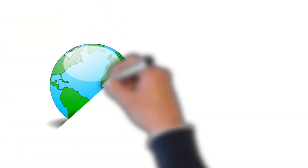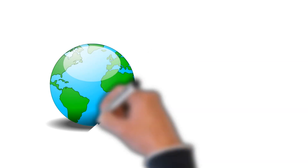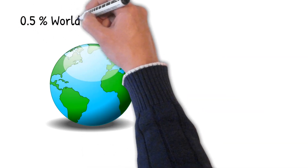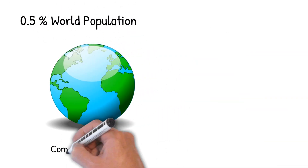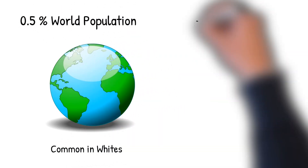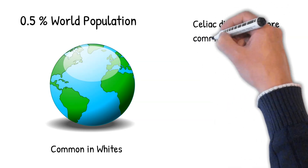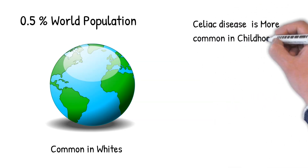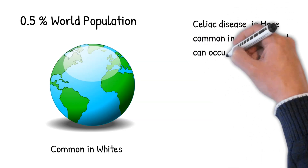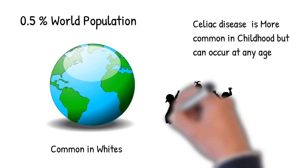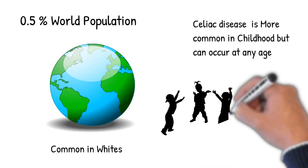Celiac disease occurs in half a percent of the world population. It is more common among whites and less common among Asians and blacks. Celiac disease can occur at any age, but the highest incidence is in infancy and childhood.